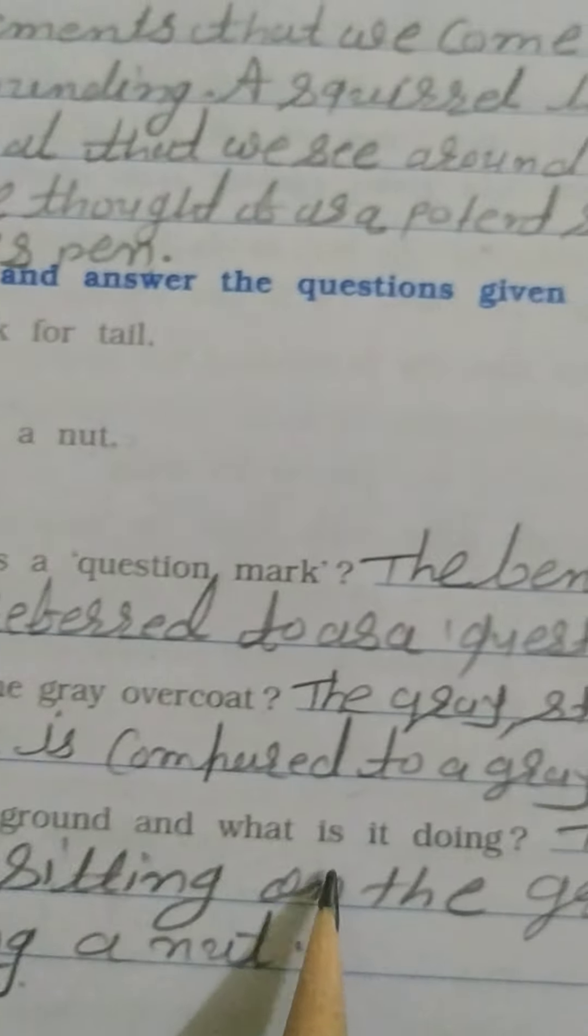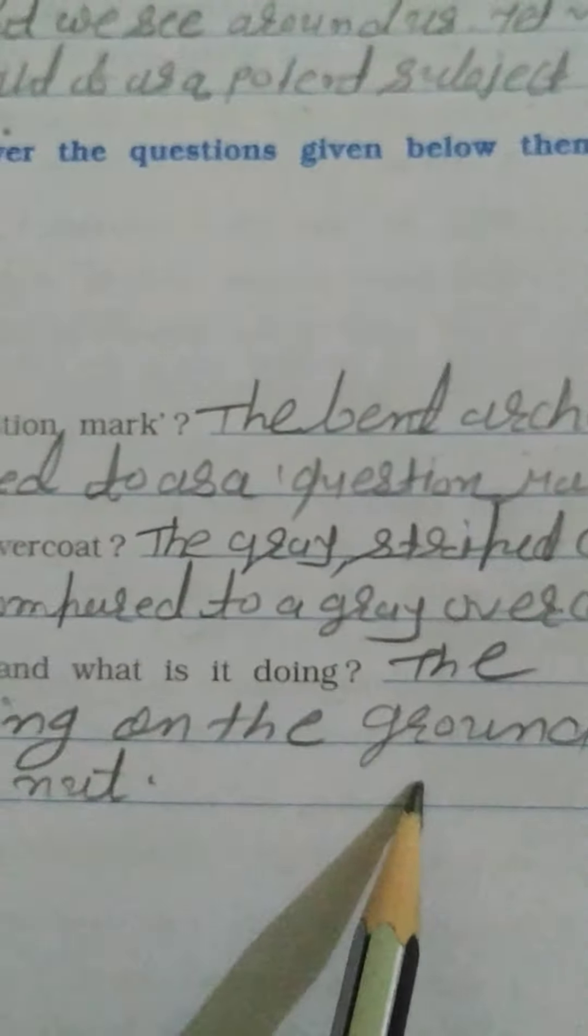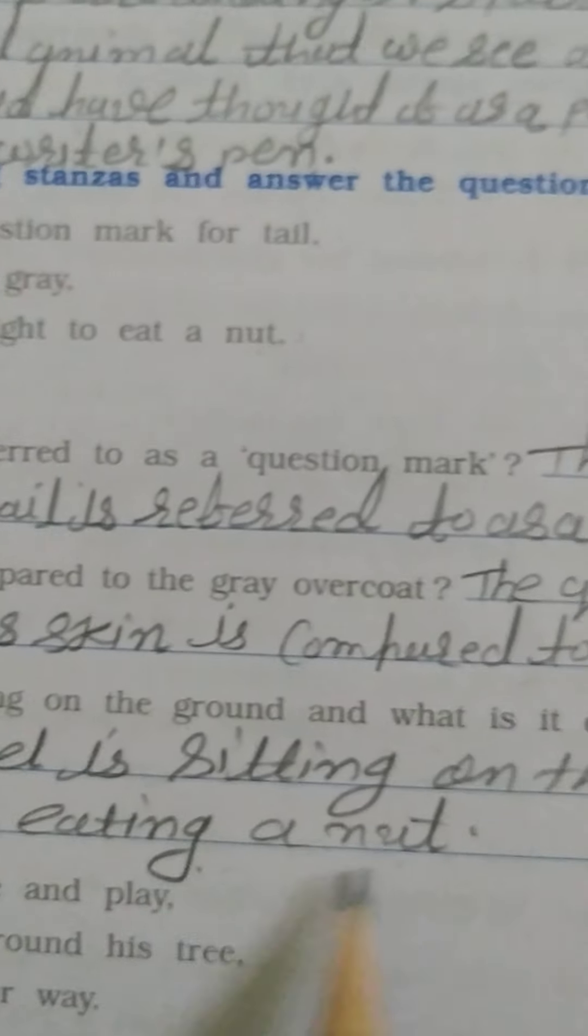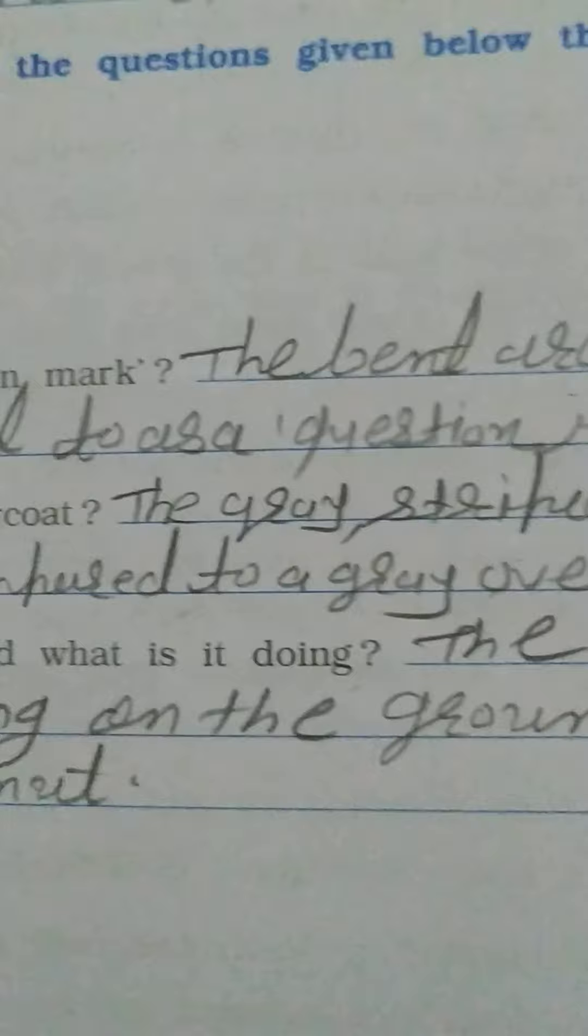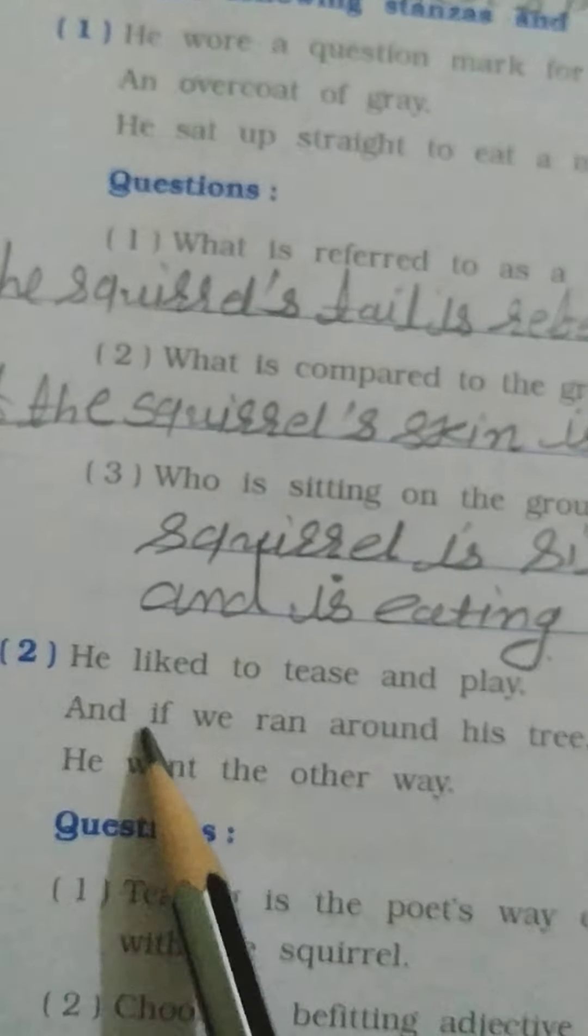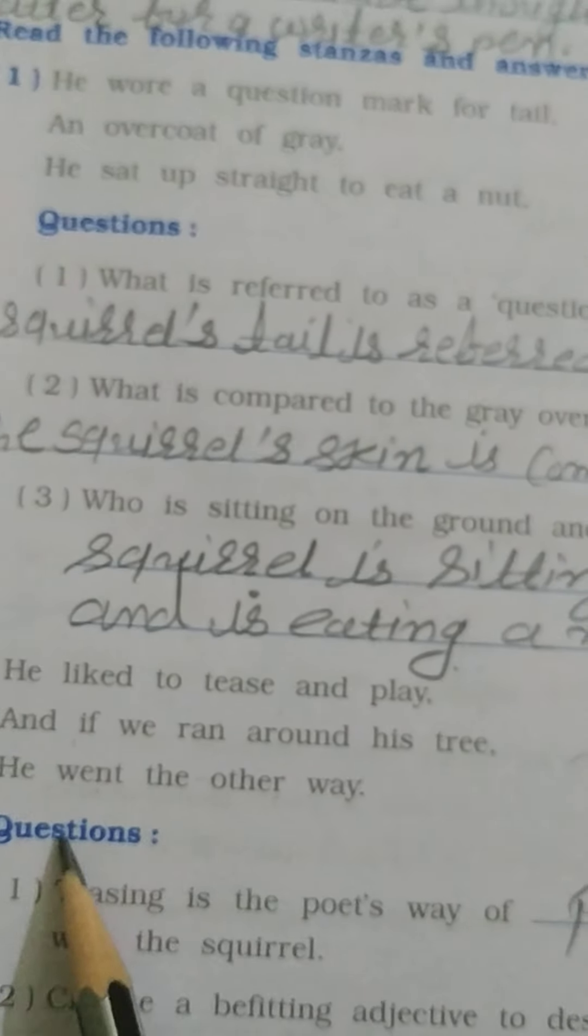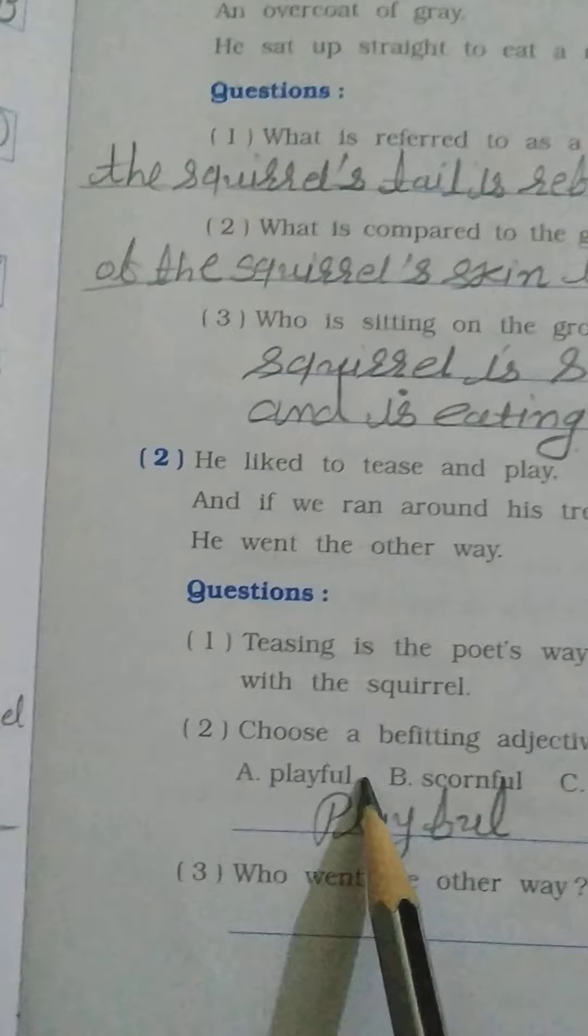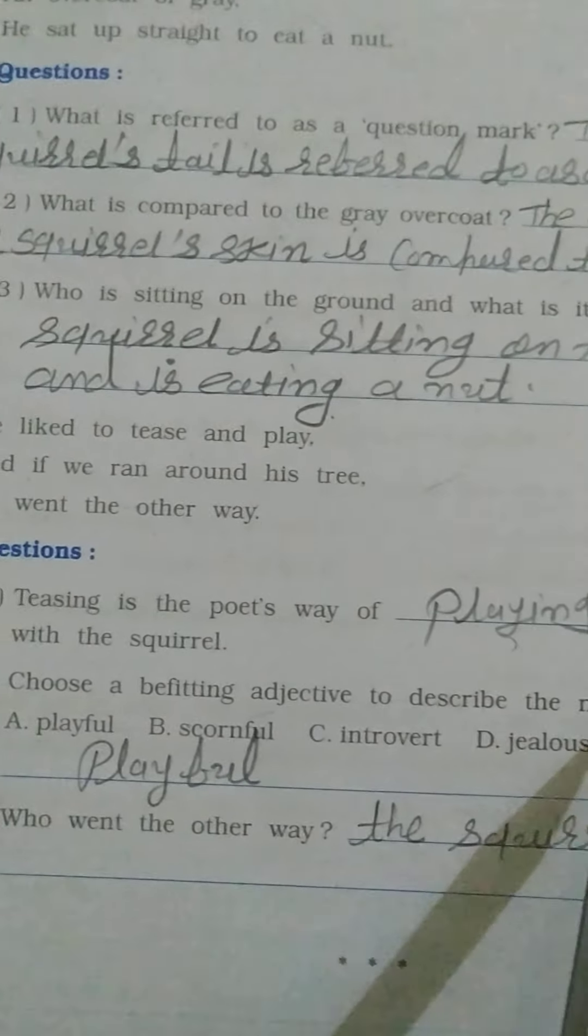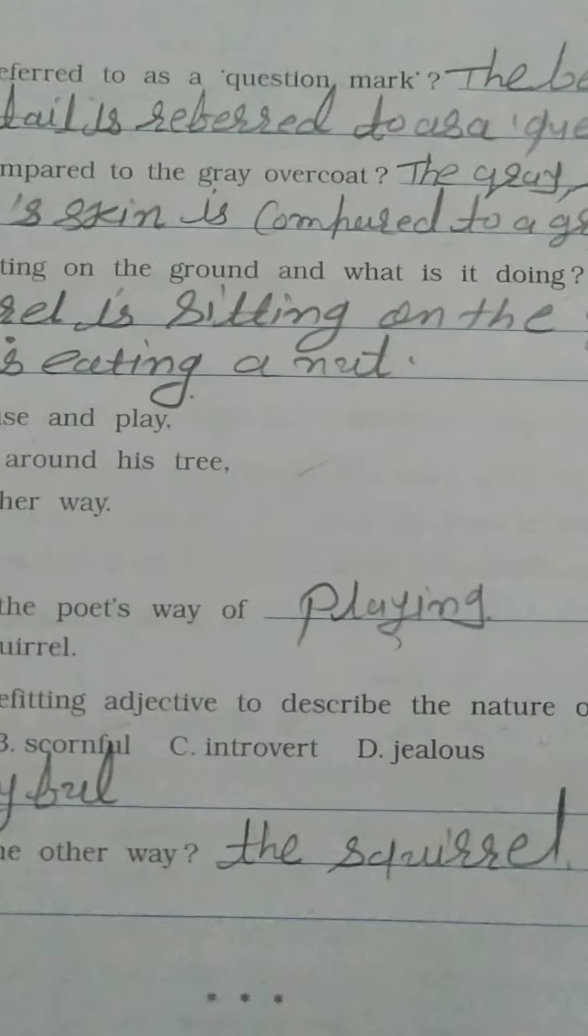Who is sitting on the ground and what is it doing? The squirrel is sitting on the ground and is eating a nut. Done. Next, he liked to tease and play and if we run around his tree, he went the other way. Teasing is the poet's way of playing. Choose a relevant adjective to describe the nature of squirrels. Playful. And who went the other way? The squirrel.